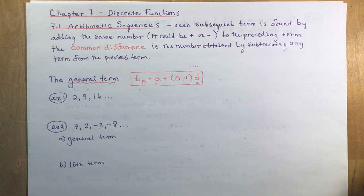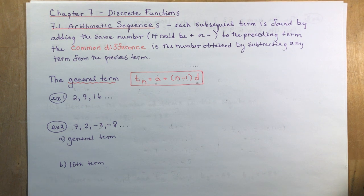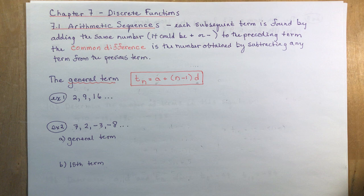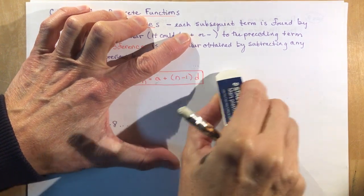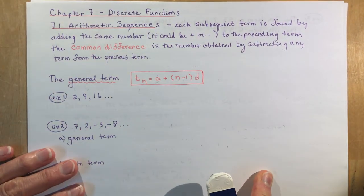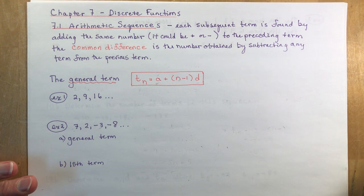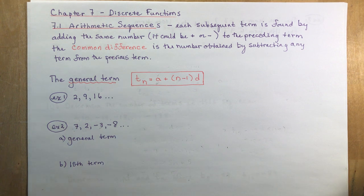7.1 is on arithmetic sequences, so this is the start of a new chapter called discrete functions. Discrete functions are totally different from anything you've done before. For some of you that will be a hooray — no more transformations. This is totally different math, and if you've been struggling with functions, this may be your chance to redeem yourself and pull up your grade. It's not really difficult; it's a little bit of logic.